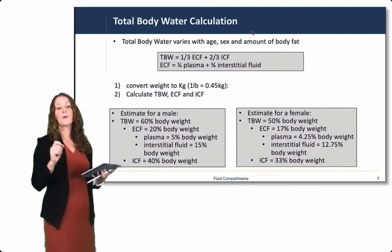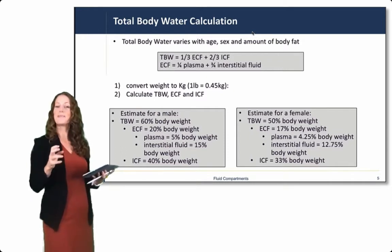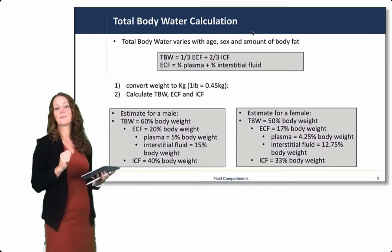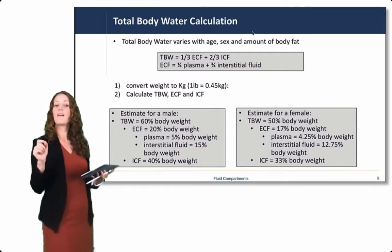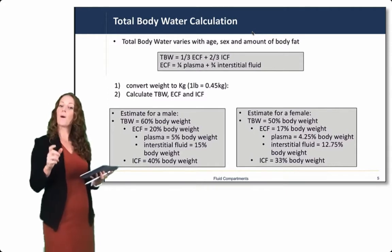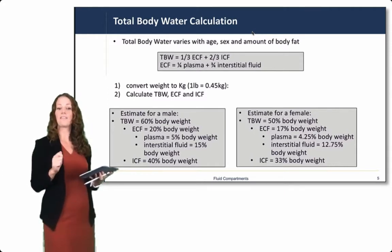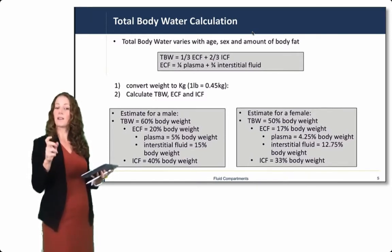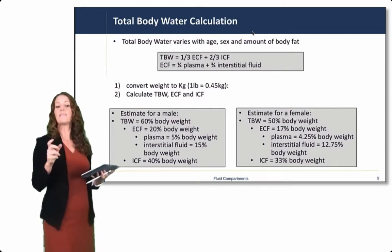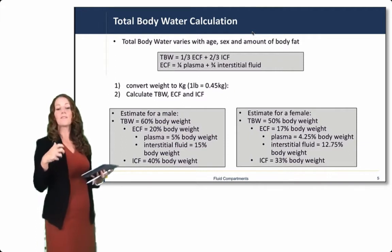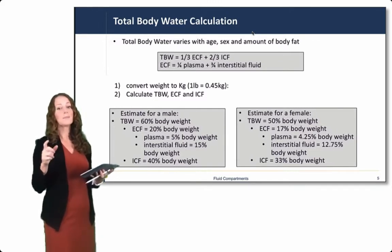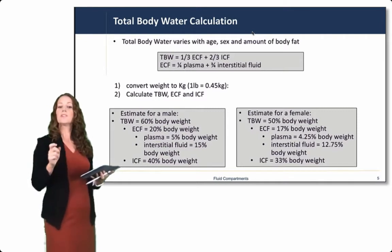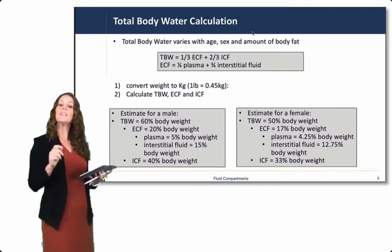First we need to convert weight in kilograms. Here we use pounds most commonly, so we convert pounds to kilograms. One pound is 0.45 kilograms. Total body water is 60% of the body weight. Taking one third of 60% gives us 20%, which gives us our ECF. Two thirds of 60% is 40%, which gives us our ICF. Plasma is one quarter of that one third, so 5% of body weight. Interstitial fluid is three quarters of that one third, so 15% of body weight.